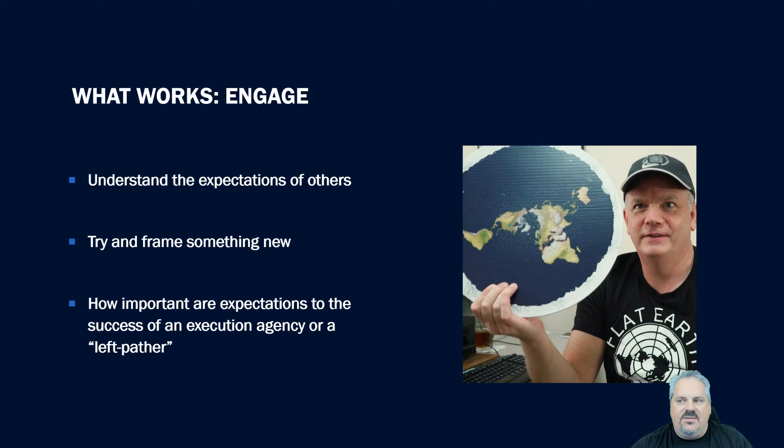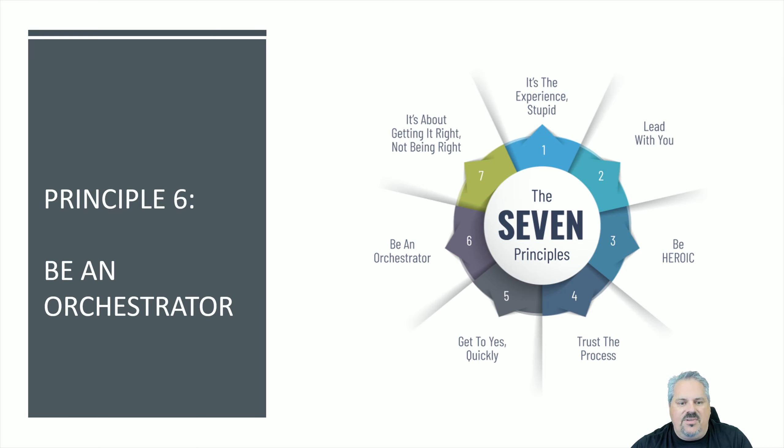So understanding the expectations of others, I think we do that really well on the team. The challenge will be as we ripple out. How do we ripple this out? How do we stay focused on something that we're doing that's so new without all of the people on the other side? The left pathers, so to speak. If we're right pathers and they're left pathers, we believe the earth is round, they believe the earth is flat and there's more of them. It's flipped. The left pathers, 99% of the world believes the world is flat and we believe the world is round. How would we go about that? How would we help people understand?